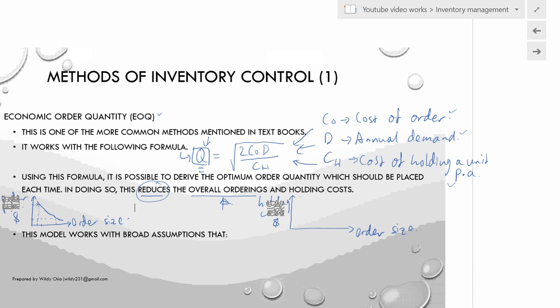EOQ helps to minimize — not eliminate — order costs. At the same time, by following the EOQ formula to determine order quantity, ordering based on that quantity helps minimize the other major cost: holding costs. The more stock you have, the greater your holding costs. Larger order sizes mean you need bigger warehouses, incurring more rental costs, more insurance costs, and more costs to look after inventory, such as security.